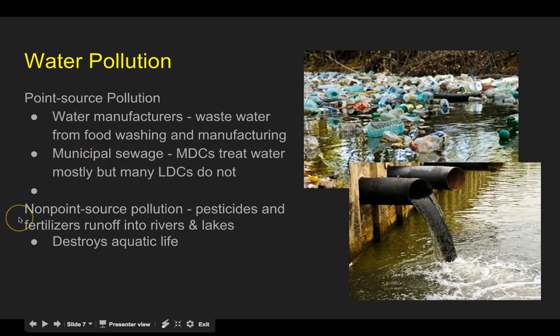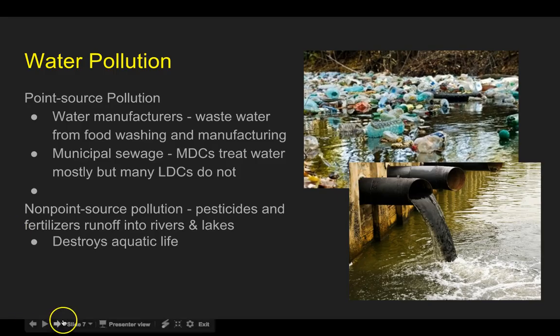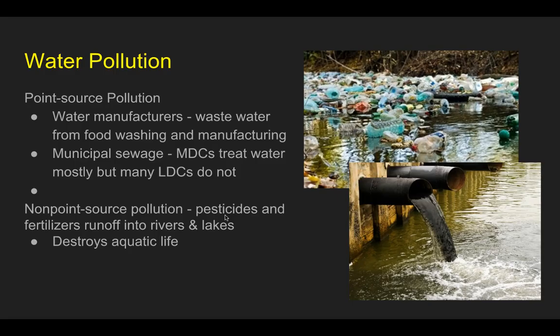Then there is non-point source pollution. For example, if a farmer lays down pesticides, fertilizers, and herbicides on their crops, whenever it rains, that water filters through the grass, picks up those particles — pesticides and herbicides — and flows into lakes, rivers, and streams. It destroys aquatic life. It's not that they're dumping toxins directly into the river, but they're inadvertently putting chemicals on grasses and crops, and in a non-point source way it's getting into the waters.